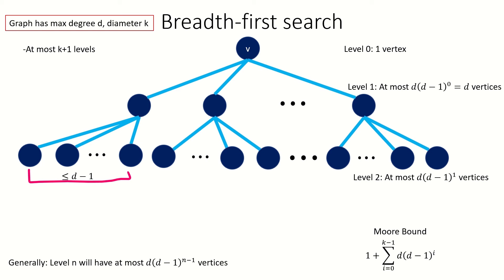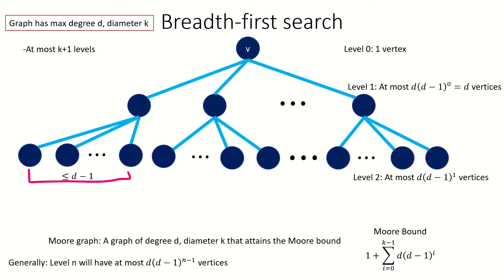We don't know if, for a given choice of d and k, there exists a graph that actually attains the Moore bound. It could be that, for whatever reason, we're not able to meet this upper bound for certain choices of d and k. What we do know is that no graph with maximum degree d and diameter k can have more vertices than this number. This leads us into Moore graphs. A Moore graph is a graph that does meet this upper bound — it's a graph with diameter k, maximum degree d, and exactly as many vertices as the Moore bound for a graph with those parameters.